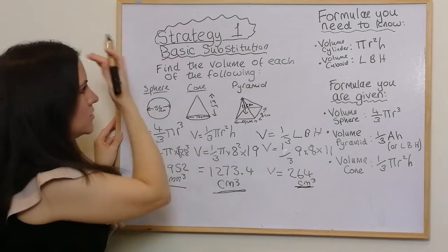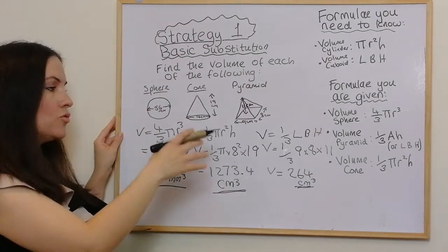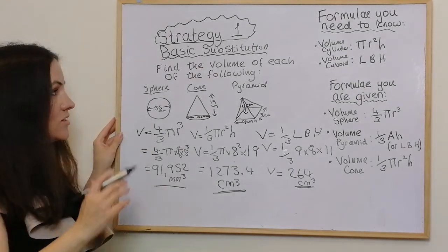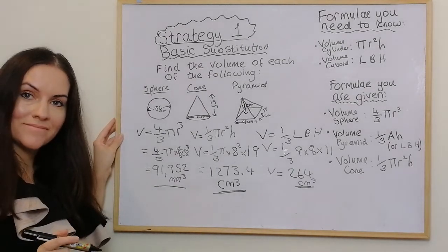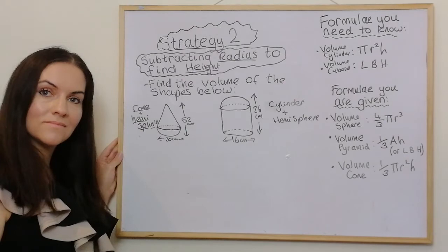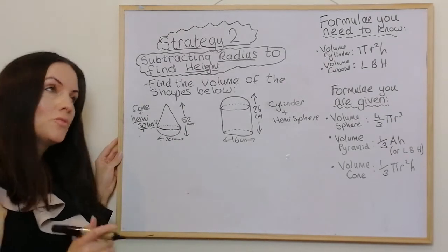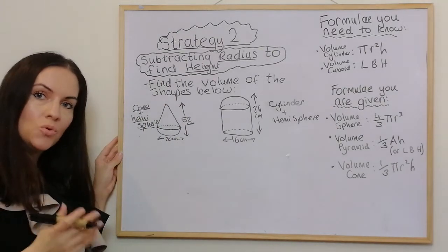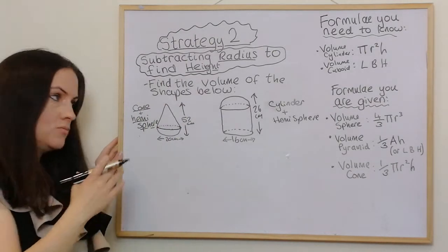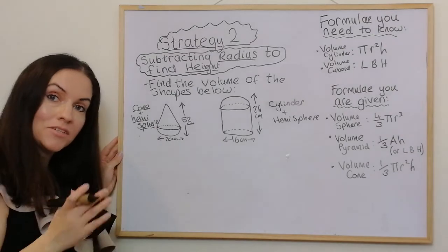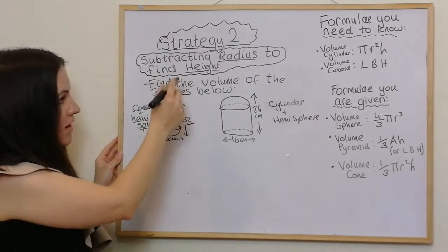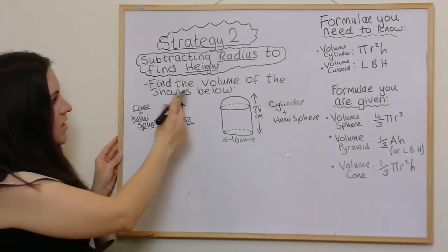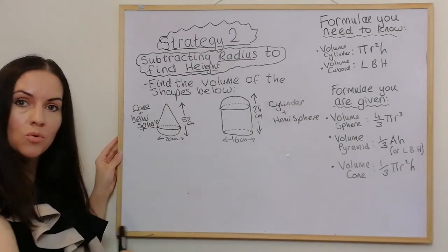So that's the first basic strategy. We will use substitution in the other strategies too, but they'll have added steps. Moving on to the second strategy: subtracting the radius to find the height. It's not entirely different from the previous examples, but we have this additional step. We're asked to find the volume of the shapes below, and we have composite shapes.